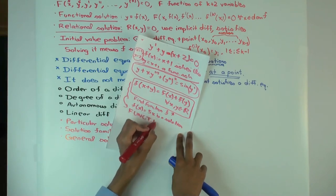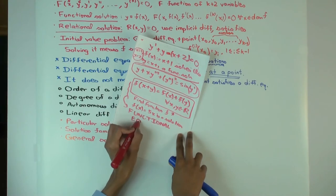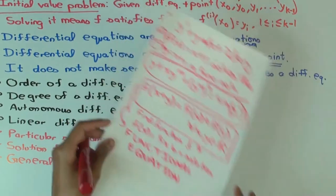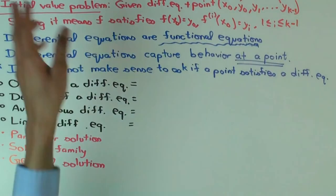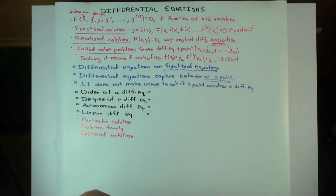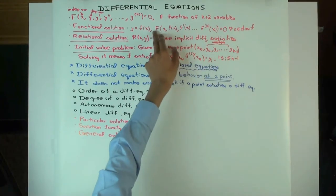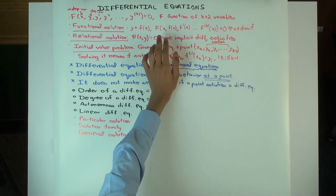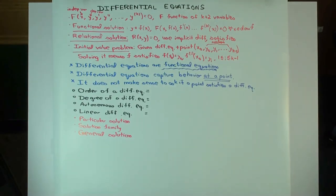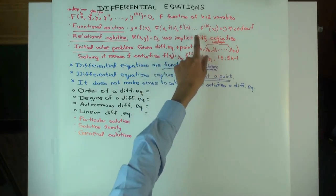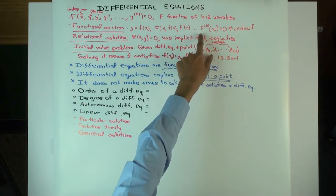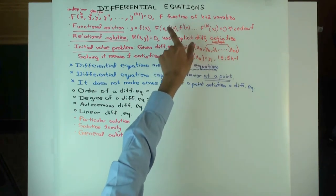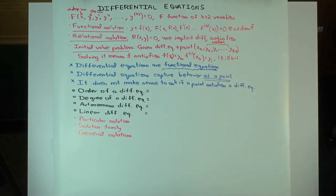Differential equations are also examples of functional equations. They are not functional equations of the additive type I just showed, but they are a different type of functional equation. When you are given a differential equation, you are not trying to solve for x and y — you are trying to solve for the function relating x and y. Differential equations have a very peculiar behavior: they capture behavior only at a single point. All the function evaluations and all the derivative evaluations are happening only at that same point x.